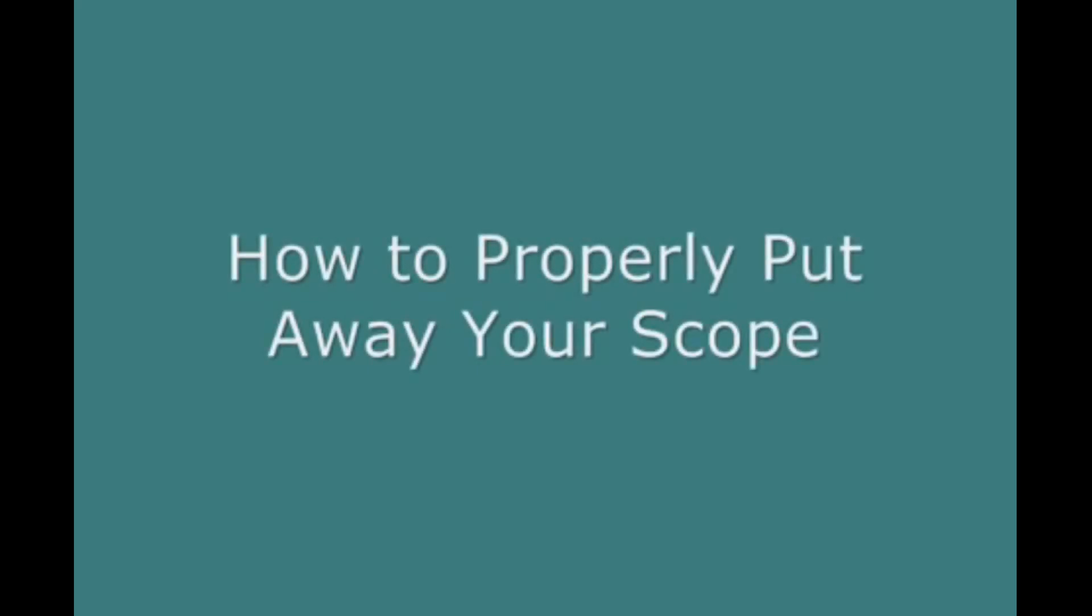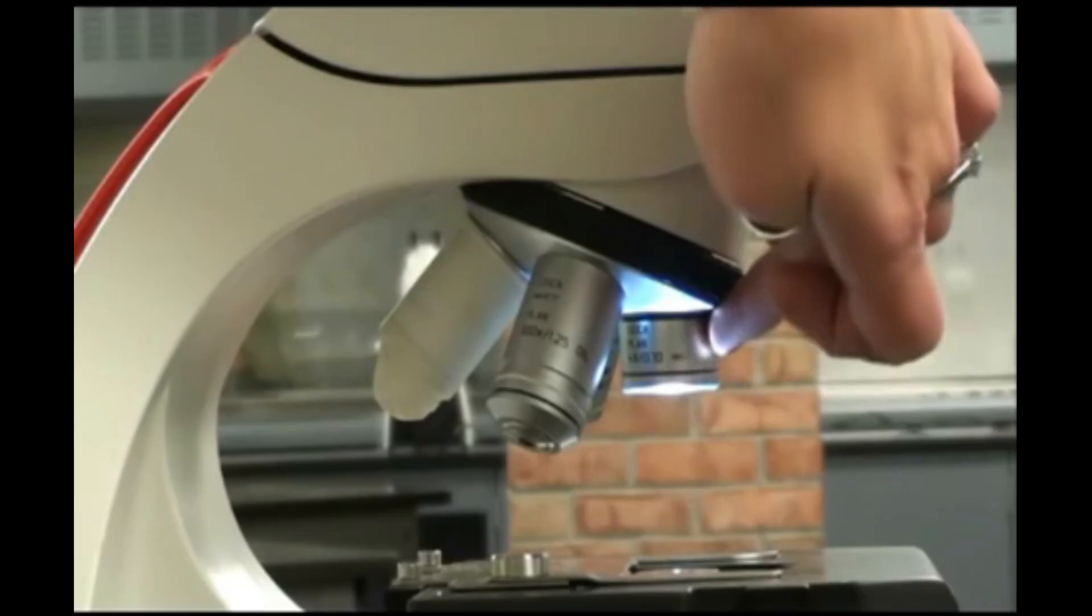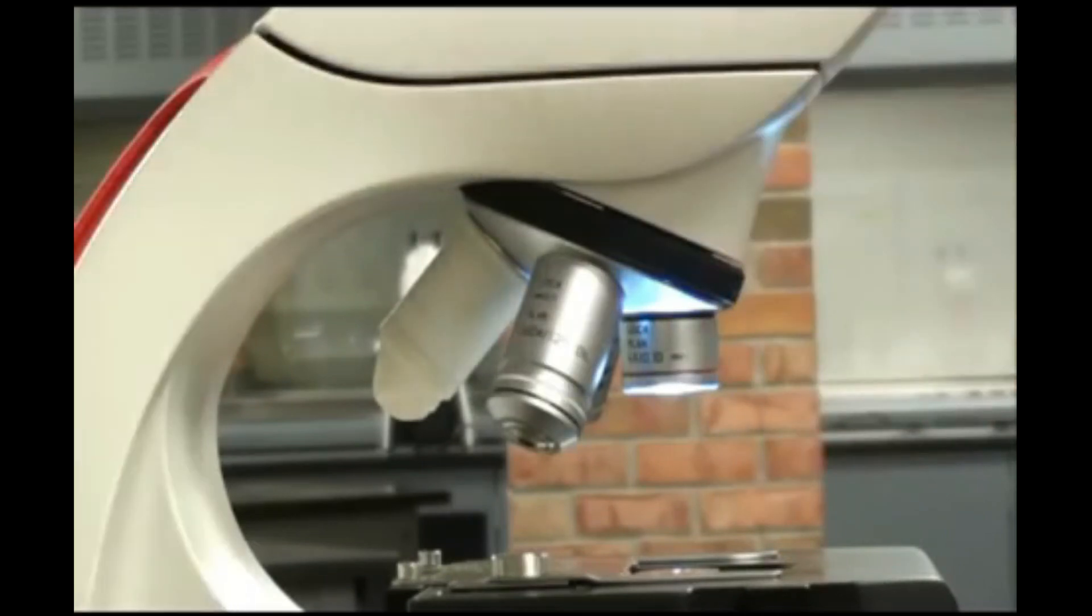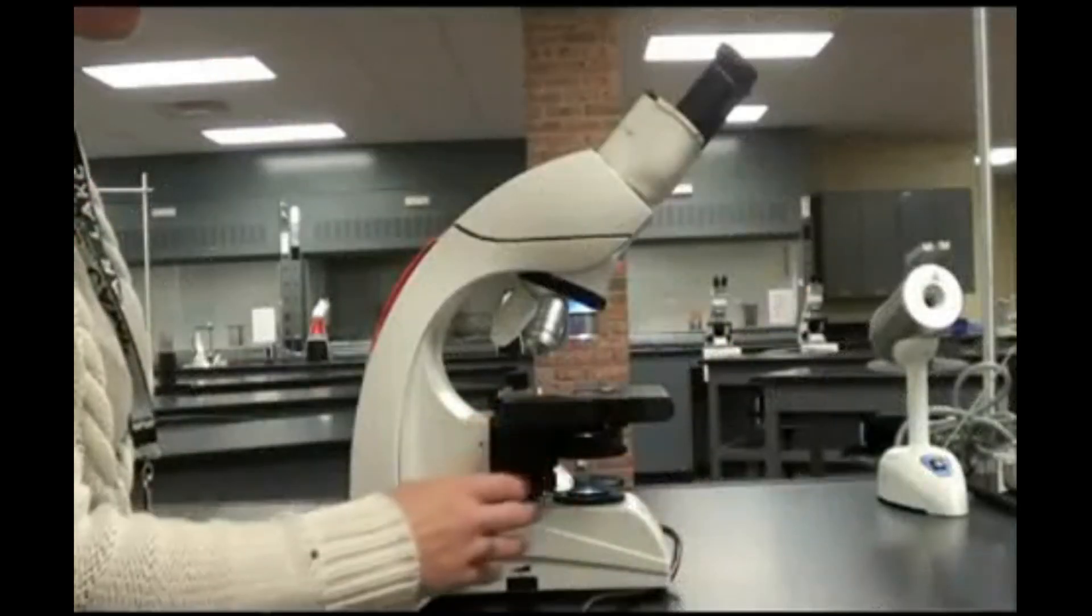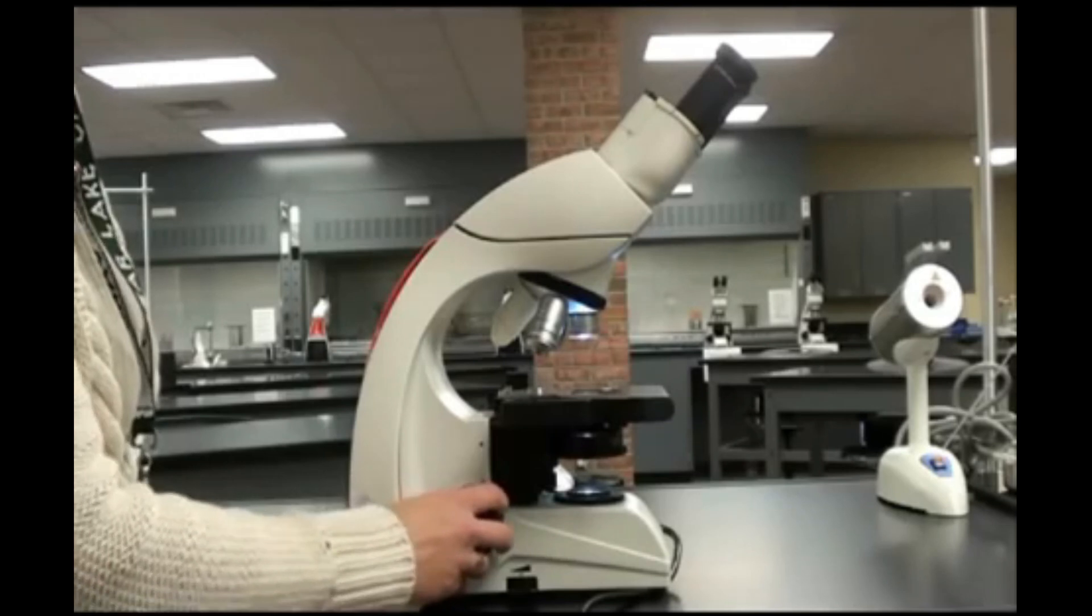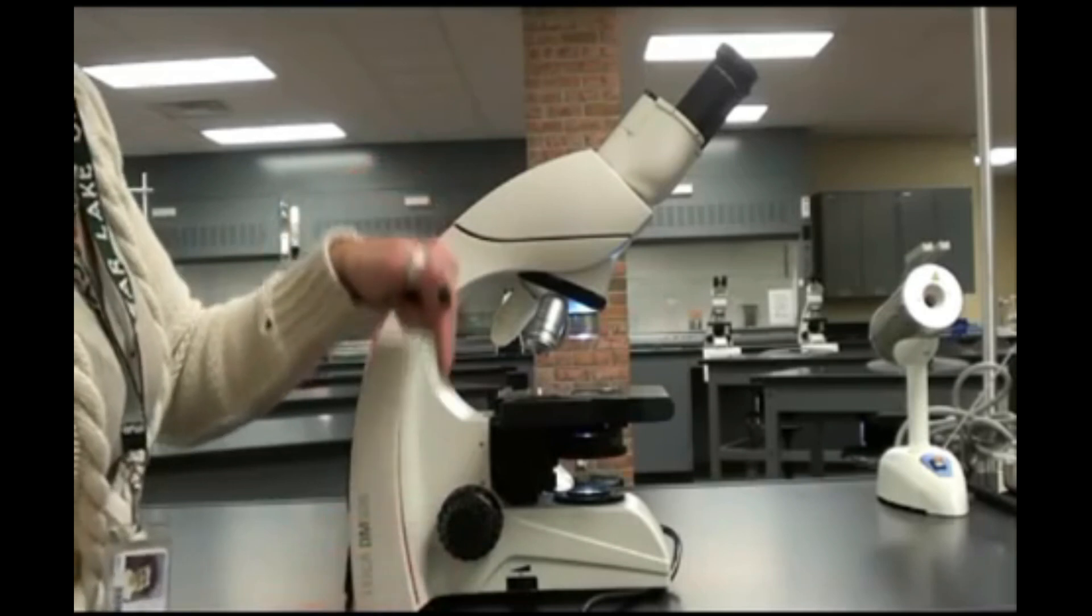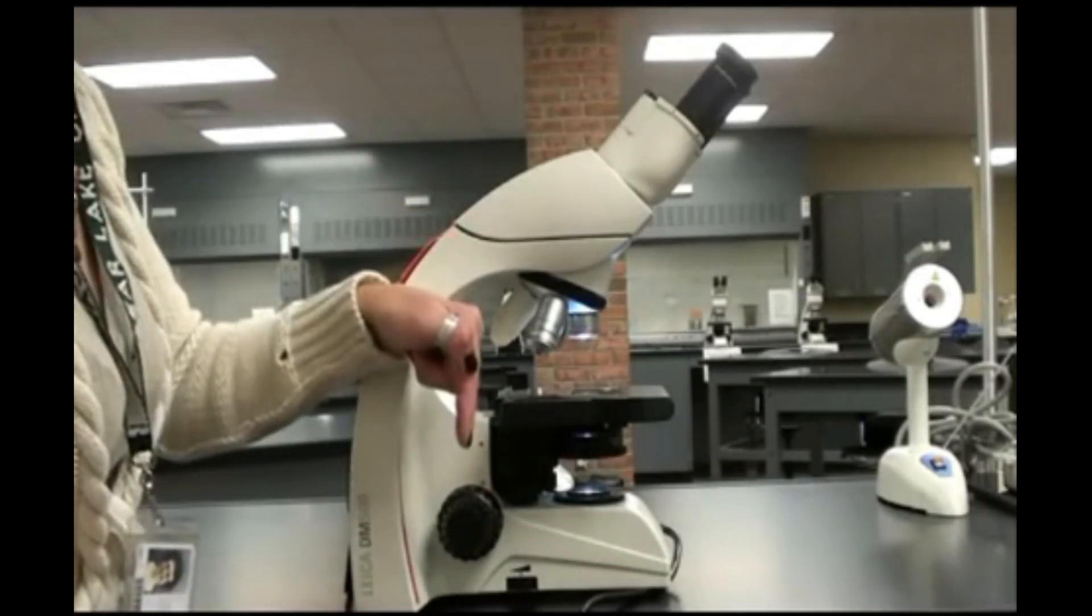When you are all done, it is important to put away your scope properly so that it won't get damaged. You do this by making sure that the shortest objective lens is pointing down, the scanning power. Then you dial the coarse focus down all the way to lower the stage as far as it can go. This way, we know that the lens is not going to smash into the stage.